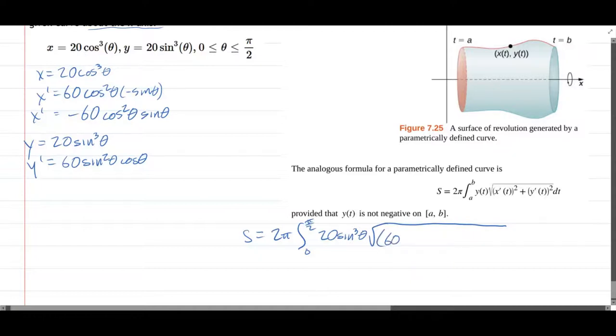Now I left off the negative because we're about to be squaring it, so that negative is going to disappear when we square it. Plus y' is another 60 sin²θ cos θ. So this looks very fun.